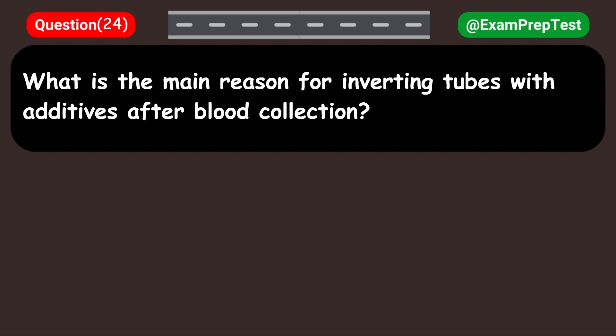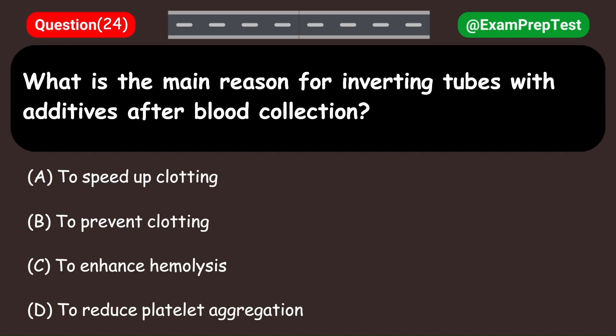What is the main reason for inverting tubes with additives after blood collection? A. To speed up clotting. B. To prevent clotting. C. To enhance hemolysis. D. To reduce platelet aggregation. Answer: B. To prevent clotting.